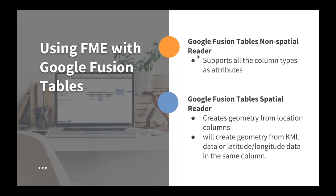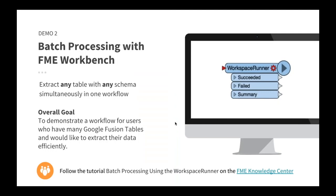There are actually two different readers you can use with Google Fusion Tables: a non-spatial one and a spatial one. An important thing to note is that for the spatial reader, your latitude and longitude need to be in the same column. If they're in separate columns, simply add a Vertex Creator — a very simple solution — and it works either way.